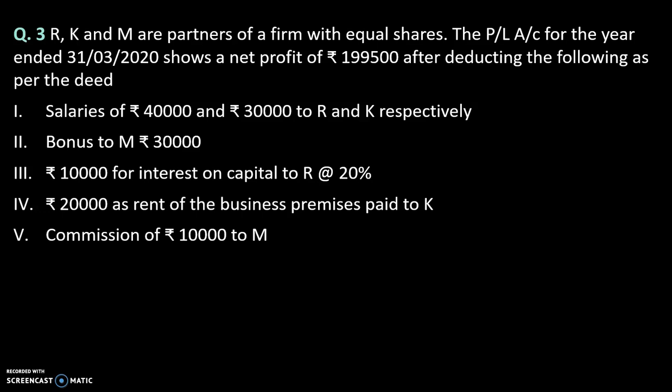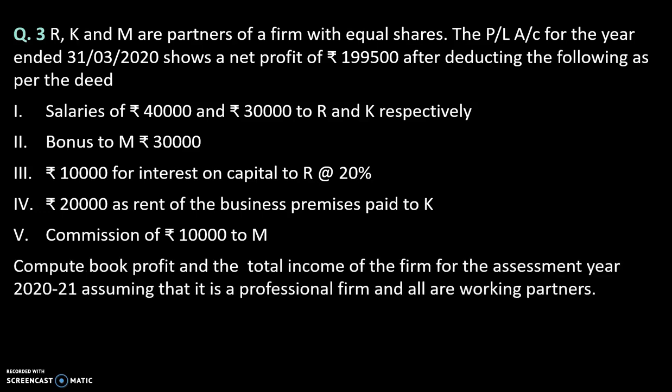Also, commission of Rs. 10,000 to R and M. Compute the book profit and the total income of the firm for the assessment year 2021-22, assuming that it is a professional firm and all are working partners.